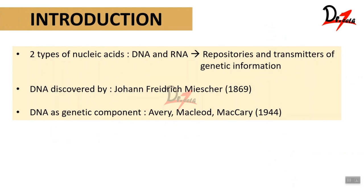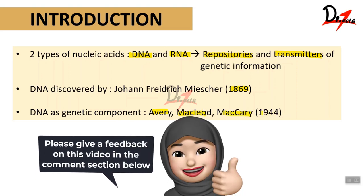There are two types of nucleic acids: DNA, that is the deoxyribonucleic acid, and RNA, that is the ribonucleic acid. These are basically the repositories and transmitters of genetic information — repositories meaning storage houses and transmitters meaning they transmit genetic information from individual to individual. DNA was discovered by John Frederick Meister in 1869, and DNA as a genetic component was established by Avery, MacLeod, and McCarty in 1944.